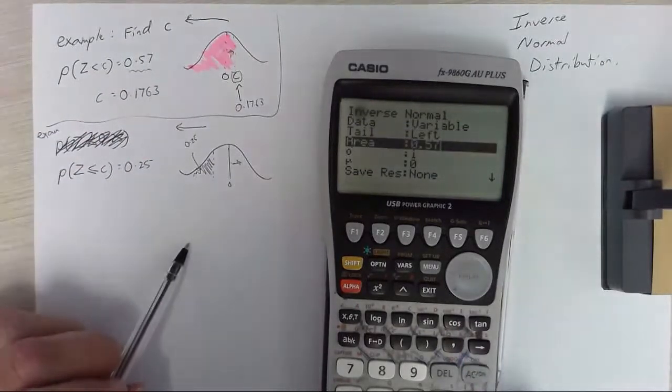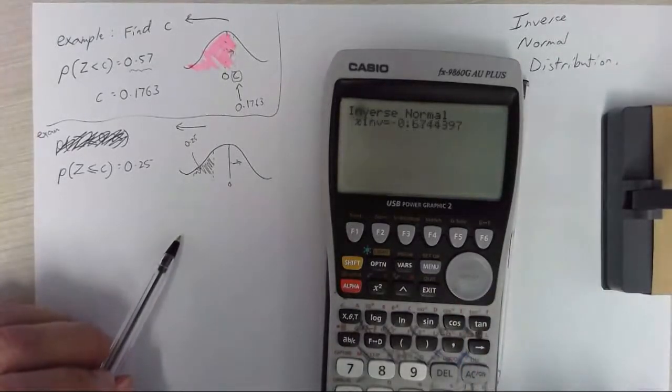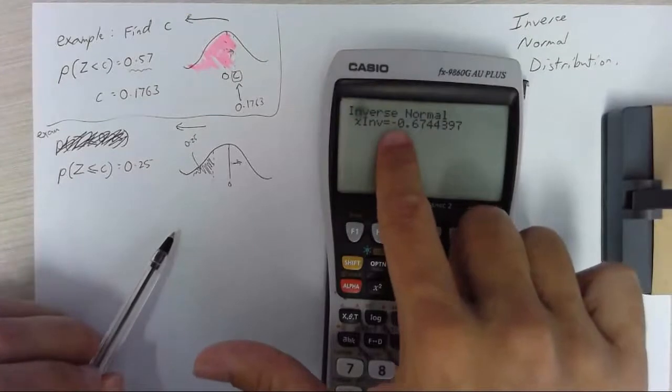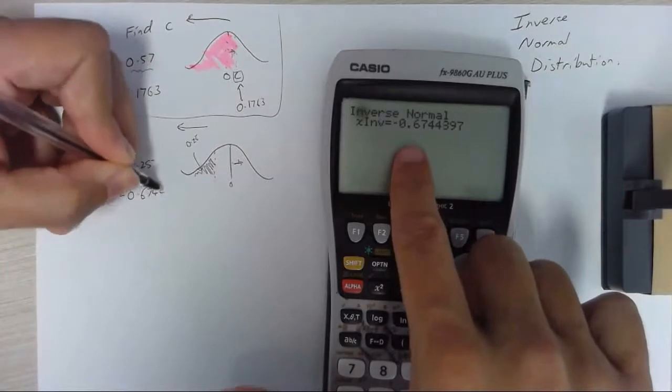The area is 0.25 and I get an answer of negative 0.6. So c equals negative 0.6744.